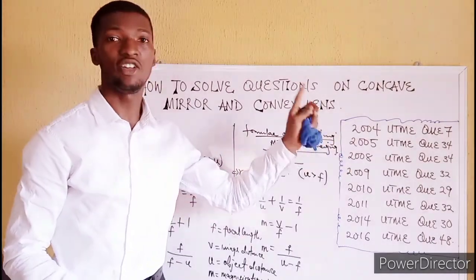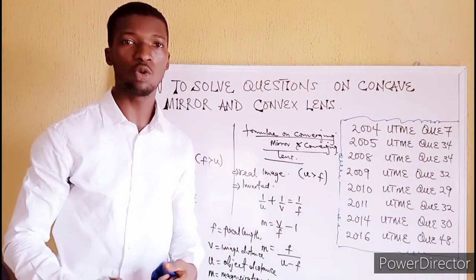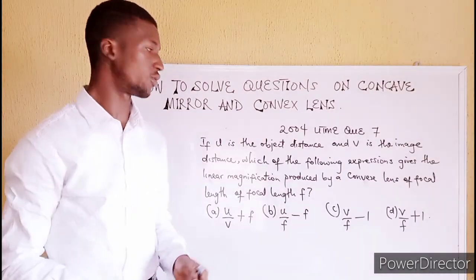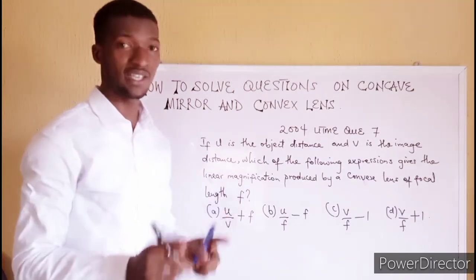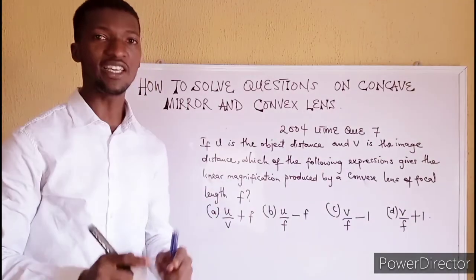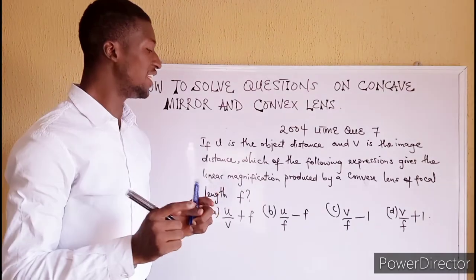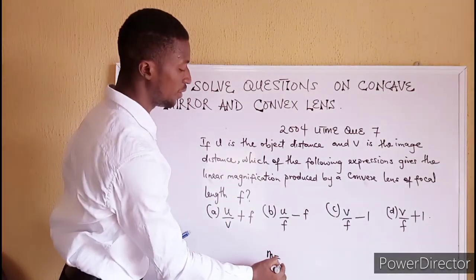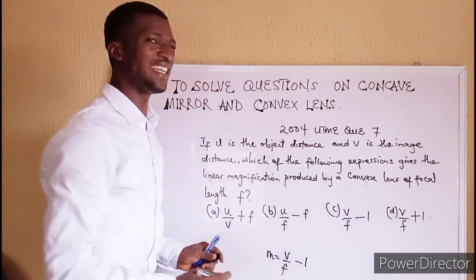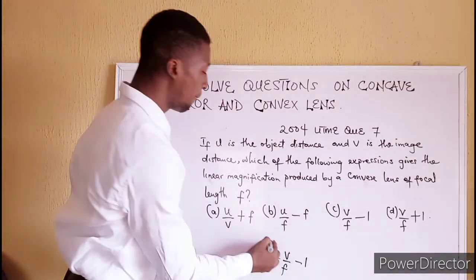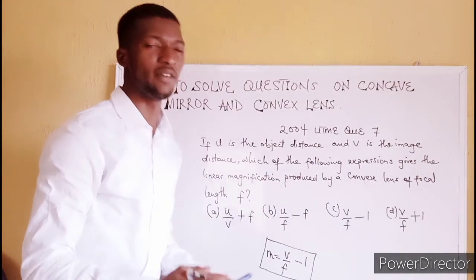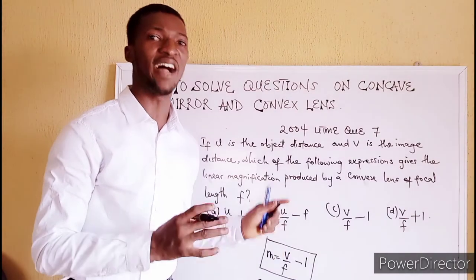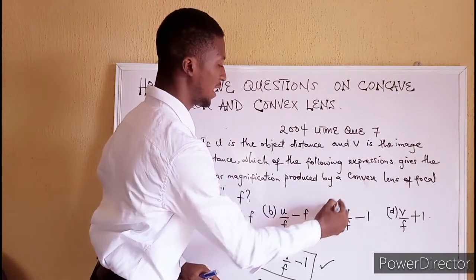We will solve questions from UTME past questions, as well as WAEC and NECO past questions related to converging mirror or converging lens. The first question is taken from 2004 UTME, question 7. It states: if U is the object distance and V is the image distance, which of the following expressions gives the linear magnification produced by a convex lens of focal length F? Since it is not stated that the image is virtual, we use the real-sense formula: M = V/F − 1. The answer is option C.